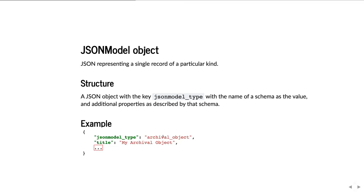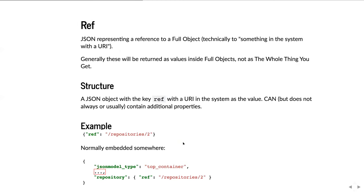For example, something with a json_model_type of archival_object would have its title and all other properties associated with an archival object. This can include nested chains of other JSON model objects, literal values, and refs. A ref is another kind of object in the system representing a reference to another object. Generally you'll see these as values inside of other objects — they're pointers inside JSON model objects to other JSON model objects.